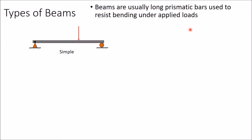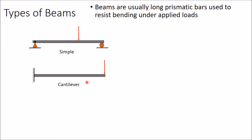Types of beams: first is a simple beam or simply supported beam which is supported at two ends, one by a pin joint or a hinge support and second one is a roller support. Second type of beam is a cantilever beam which is fixed at one end.